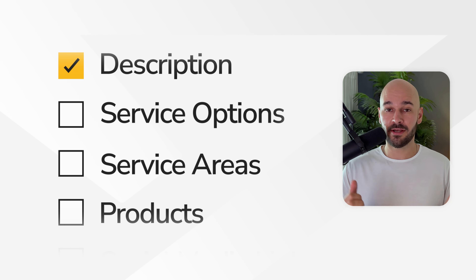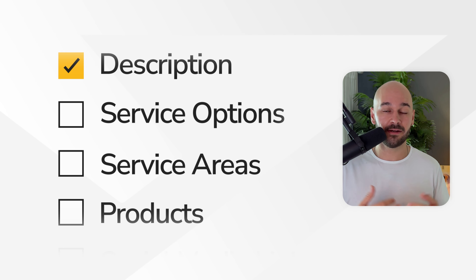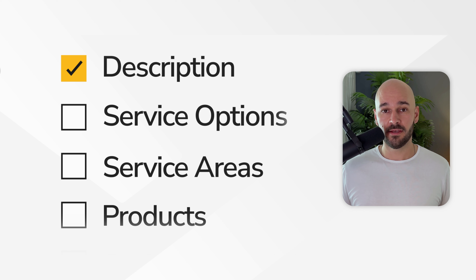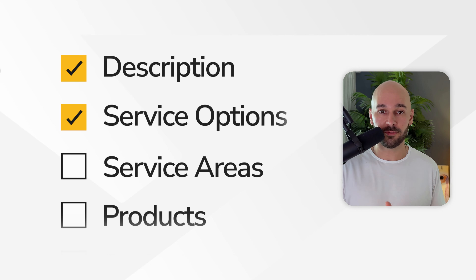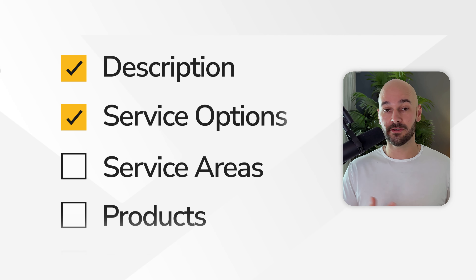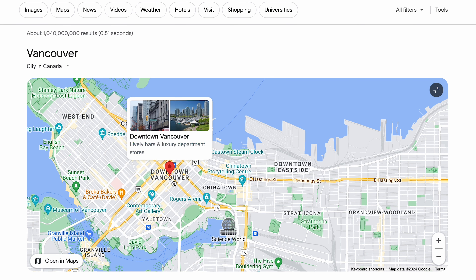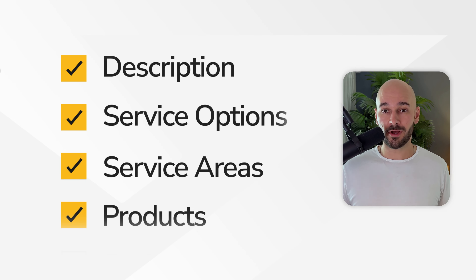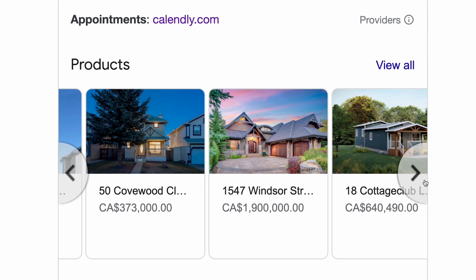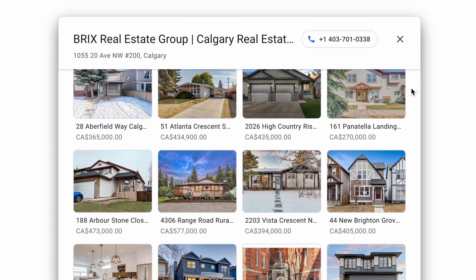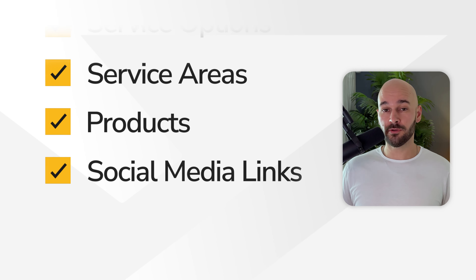Then you have your description — put specific keywords in there, which I'll get to later. This is where you describe what you do, where you work, who you service. For service options, I'd just put online appointments — you typically meet people online first, and you never want to meet people for the first time at an open house. Then put your service area, which is obviously the area you actually service. Products is where a lot of real estate agents put their listings — just listed, sold, whatever. The last thing is your social media links, which show really nicely at the very bottom of your profile.